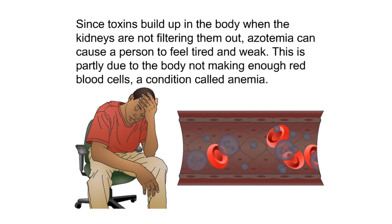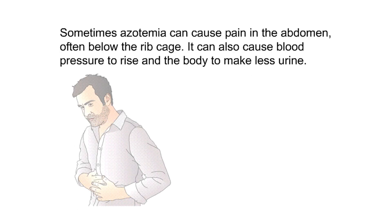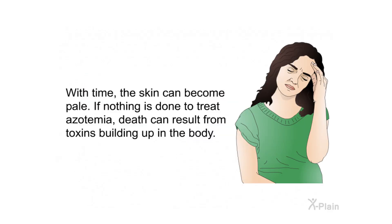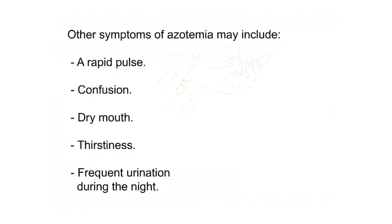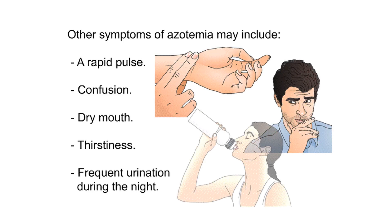Azotemia can cause a person to feel tired and weak, partly due to the body not making enough red blood cells — a condition called anemia. It can also cause pain in the abdomen, often below the rib cage, and can cause blood pressure to rise and the body to make less urine. The skin can become pale over time. If untreated, death can result from toxins building up in the body. Other symptoms may include a rapid pulse, confusion, dry mouth, thirstiness, and frequent urination during the night.